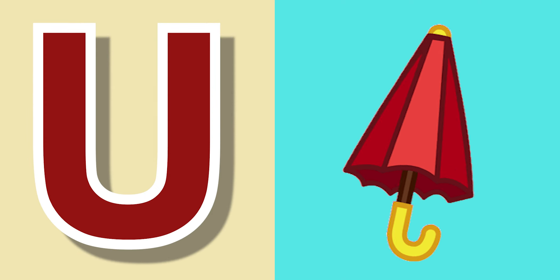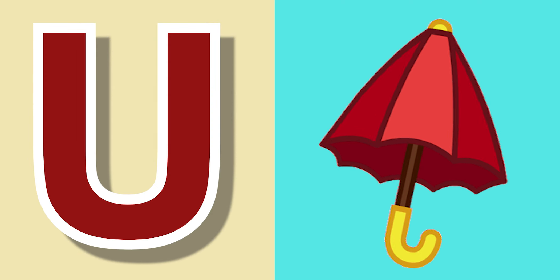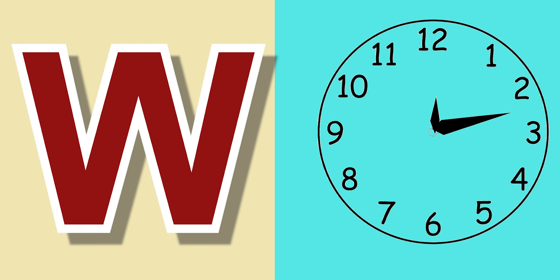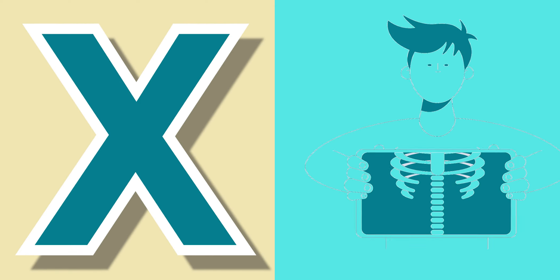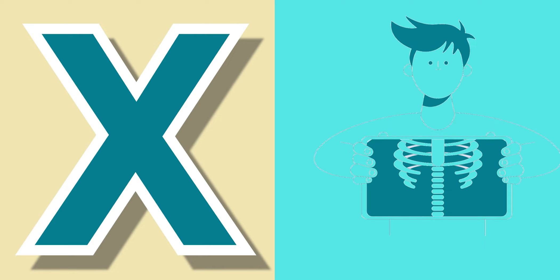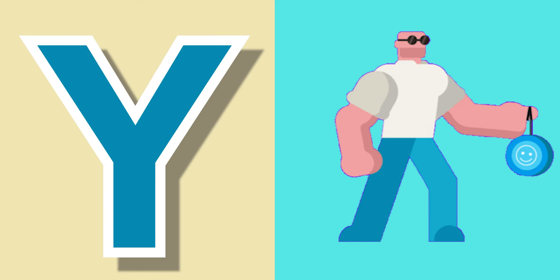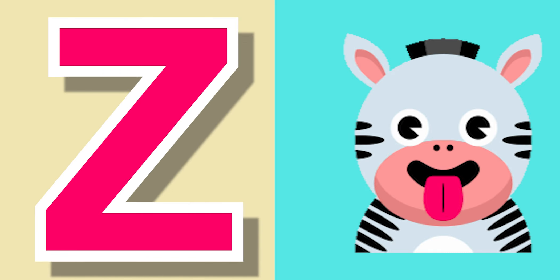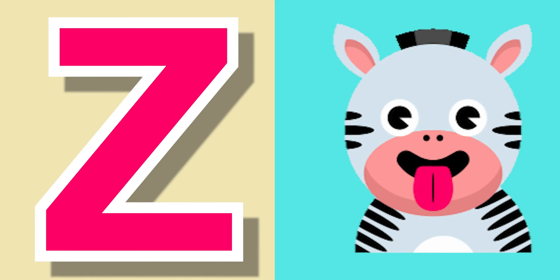T for Tree, U for Umbrella, V for When, W for Watch, X for X-Ray, Y for Yo-Yo, Z for Zebra.